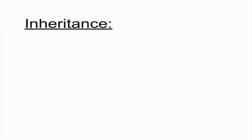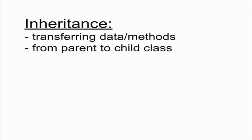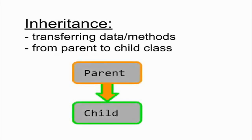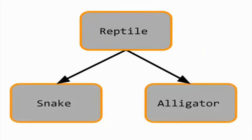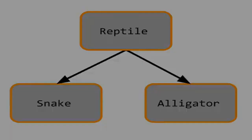Inheritance is the process of passing the attributes and behaviors of one class down to descendant classes. For example, you can start with a class like reptile and have its descendants be snake and alligator. Although snake and alligator have different attributes and behaviors, both classes are derived from the same reptile class.